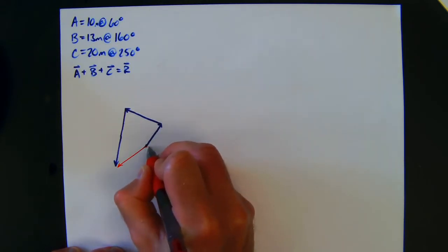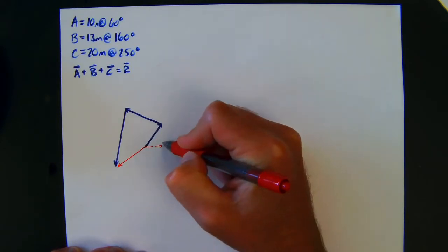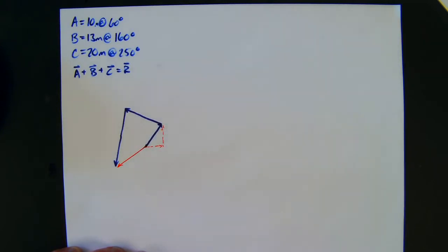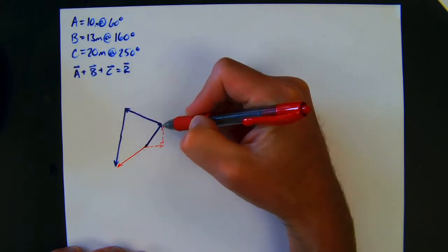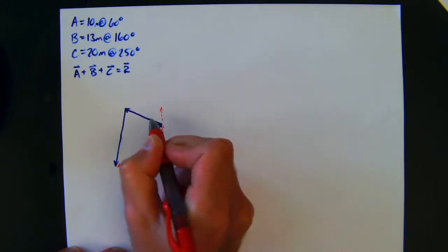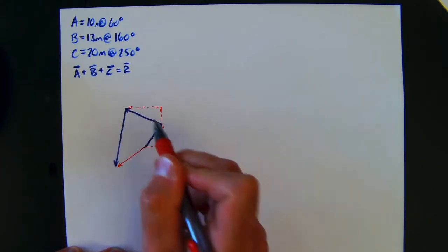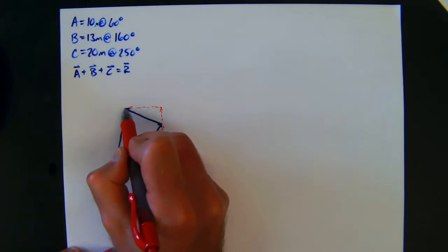So if I break this up into an x component and a y component, remember that the components are the x and y values, and we do that because they're at 90 degrees. I can break this guy up into its x and y component, and I can break this guy up into its x and y component.